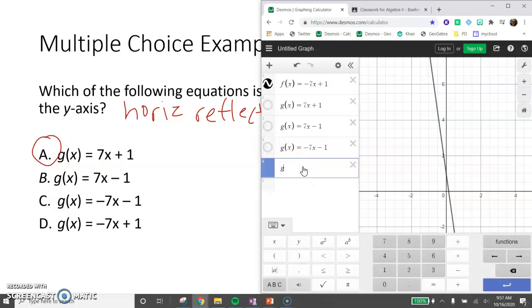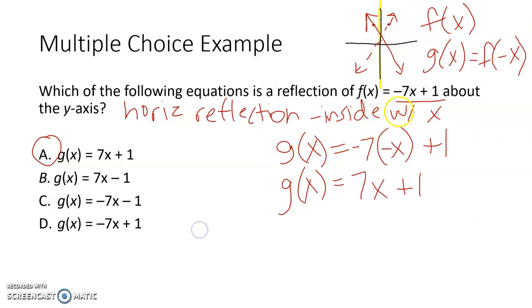And then our last one is g of x equals negative 7x plus 1. Is that the same function that we were given? Yeah, it is. So that obviously wouldn't be the answer because that is the same function that we were given.